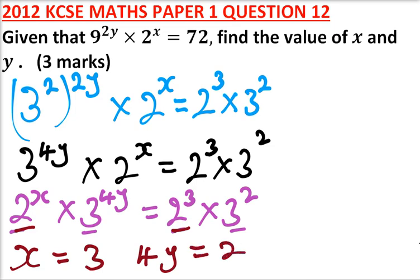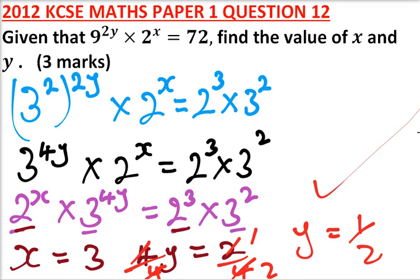Divide both sides by 4, so we have 4 divide by 4, this is 1, this is 2, so it means y is equal to a half. So that is how you work it out. You get yourself three marks.